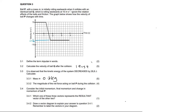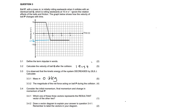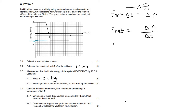Moving on to question 3.3.2: calculate the magnitude of the net force acting on bore P during the collision. Typically when they give mass, velocity, and time, you use F net times delta T equals delta P. Choose a direction as positive — to the right is positive. We want F net, so rearranging: F net equals delta P over delta T, which is MV final minus MV initial over delta T.